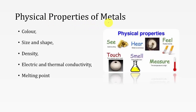The physical properties of metals include: color, which can be visualized with the naked eye; size and shape of the material; density; electric and thermal conductivity; and melting point. Melting point means the temperature at which the metal starts to melt. Electric and thermal conductivity means the ability of the material to conduct electricity and heat.